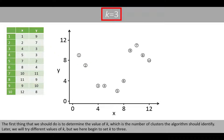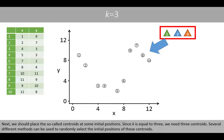The first thing that we should do is to determine the value of k, which is the number of clusters the algorithm should identify. We'll try different values of k, but we here begin by setting k to three. Next, we should place the so-called centroids at some initial positions. Since k is equal to three, we need three centroids. Several different methods can be used to randomly select initial positions of these centroids.